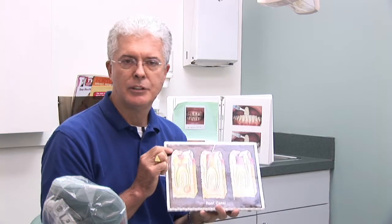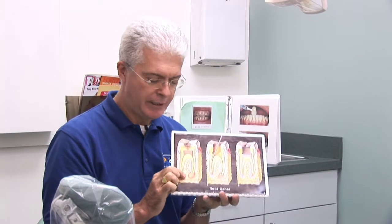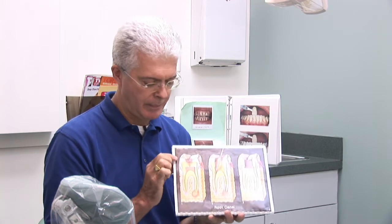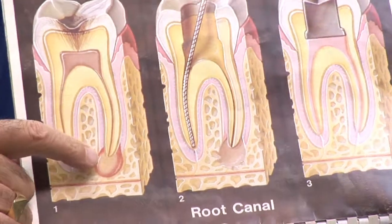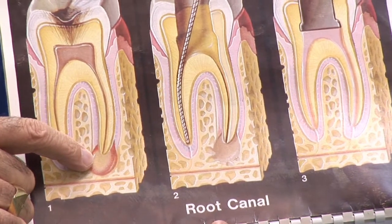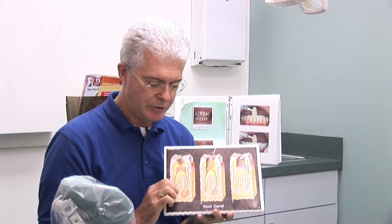A root canal has to do with a treatment down inside the root of a tooth. Here I'm showing a tooth that's been infected with a cavity and created an infection down inside the root going out into the jaw bone. This causes the pulp of the nerve inside the tooth to die and become necrotic, or dead, and it needs to be cleaned out so that the infection is removed from the tooth.